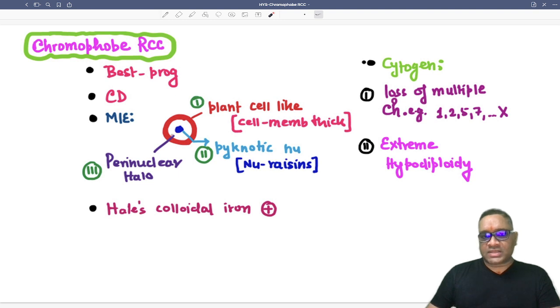And the third important thing is around the nucleus, you can see there is a clear space. That is called perinuclear halo. So plant cell-like appearance, pyknotic nuclei, and perinuclear halo, these are the three diagnostic findings for chromophobe RCC on histological examination.